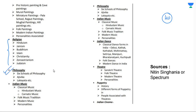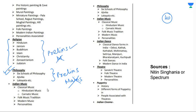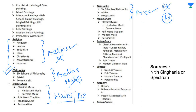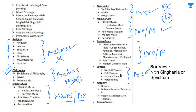Philosophy is asked in prelims, not in mains. Indian music is asked in both prelims and mains because it's part of art and culture. Indian dance is also asked in both prelims and mains. Theater is only asked in prelims. Puppetry is only asked in prelims. You can prepare these topics from Nitin Singhania Sir's book.